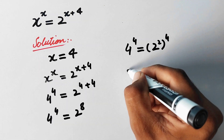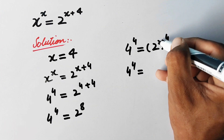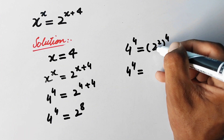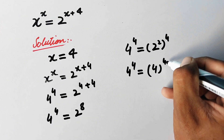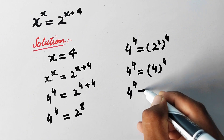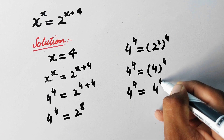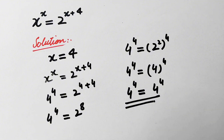We can write 2 power 8 as 2 squared, whole power 4, which equals 4 power 4. So we have 4 power 4 equals 4 power 4 — both values are the same, and hence it is proved that our answer is correct. Hope you liked the video, please like and subscribe to my channel. Thanks for watching, take care, bye!